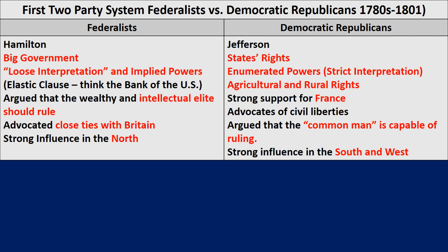The Federalist Party — think about founding fathers like Alexander Hamilton promoting a big government, loose interpretation of the US Constitution using implied powers. Think about the Bank of the United States. The very first one was not word-for-word written in the Constitution, but they used the Elastic Clause to say it was necessary and proper for the benefit of the country and they got it passed. They argued that the wealthy and intellectual elite should be in power and advocated close ties with Great Britain. Their strongest support was in the North.